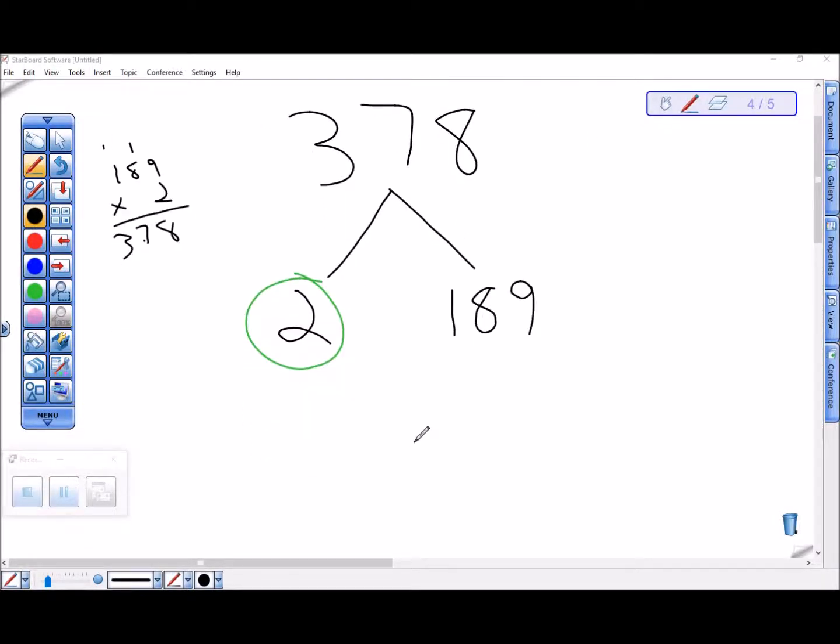Or if you add up the digits, 1 plus 8 plus 9 is 18, so that makes it divisible by 9. However you recognize that, you can divide this by 9 next or 3 or whatever other factors you actually see. I'm going to go for 9.